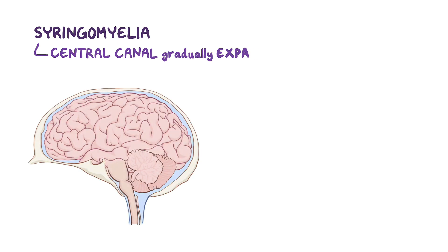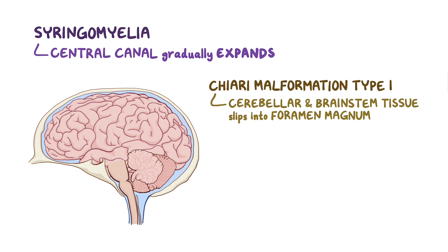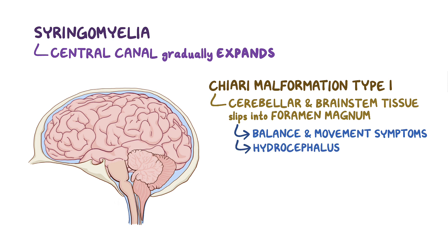In syringomyelia, the central canal of the spinal cord that houses the cerebrospinal fluid gradually expands. This expansion may be caused by acquired factors, but the main cause of syringomyelia is a congenital condition called Chiari malformation type 1. In this condition, the cerebellar and brain stem tissue slip down into the foramen magnum, the opening at the base of the skull. This malformation results in a variety of balance and movement symptoms related to the cerebellum and usually results in hydrocephalus, an abnormal accumulation of cerebrospinal fluid in the brain.